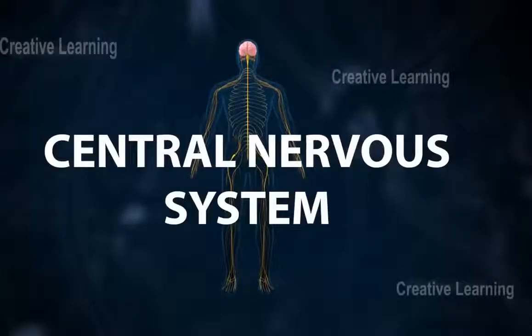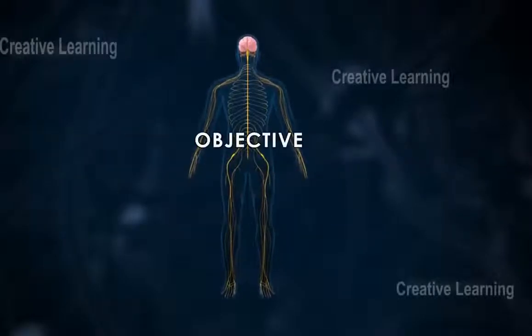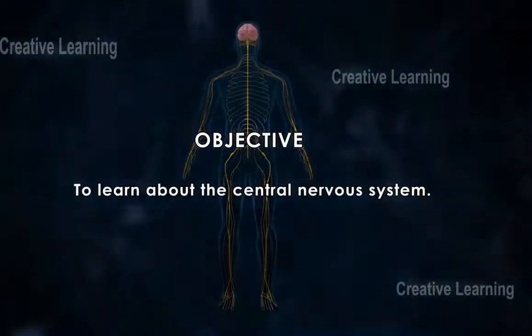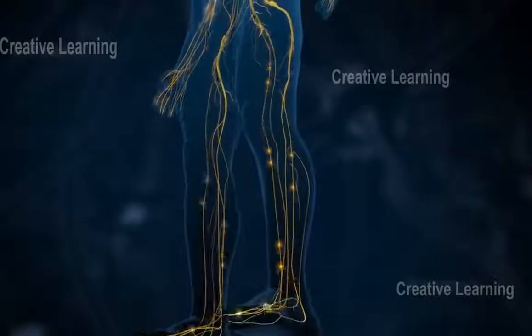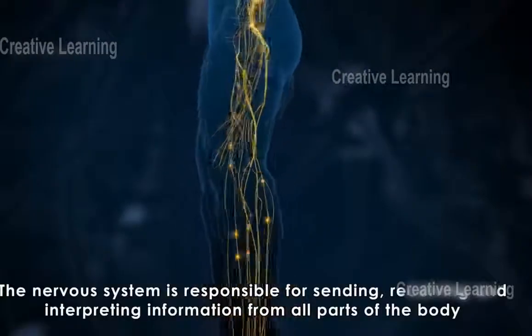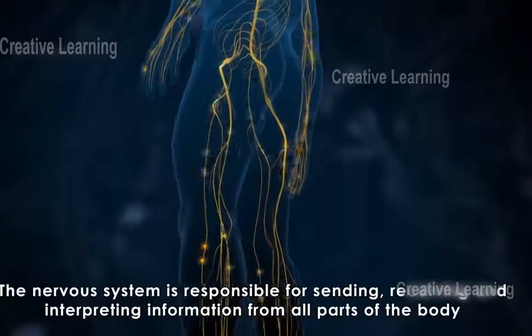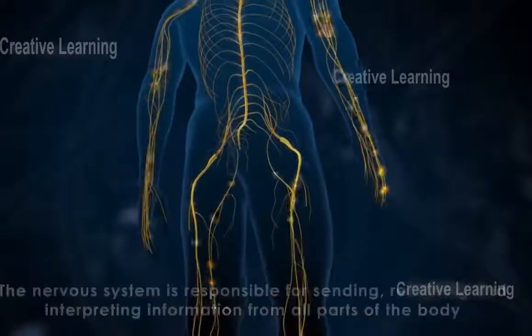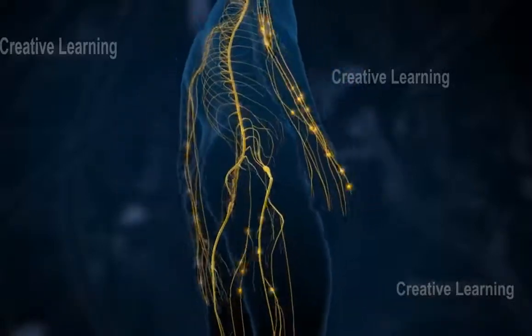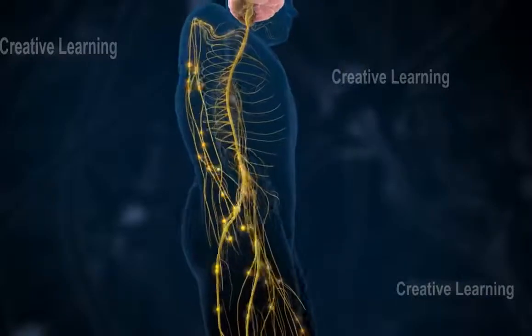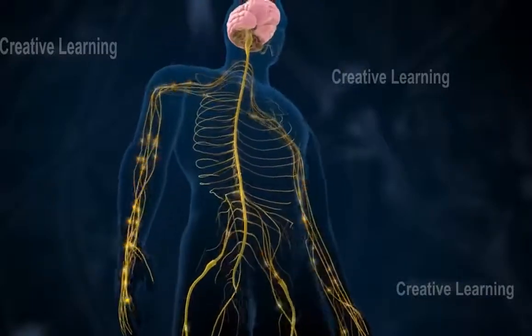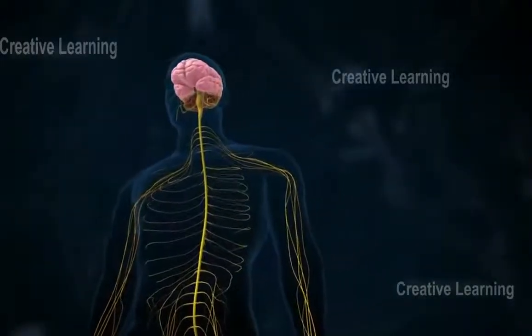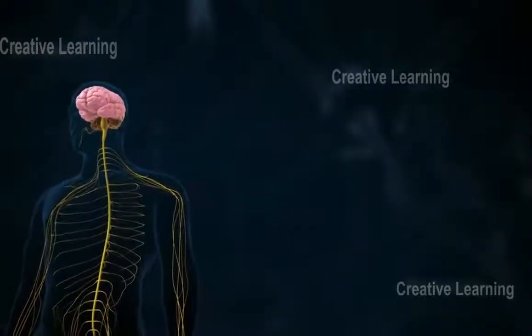The central nervous system: objective to learn about the central nervous system. The nervous system is responsible for sending, receiving, and interpreting information from all parts of the body. It responds to external stimuli and also monitors and coordinates the functions of internal organs. The central nervous system is composed of the brain and spinal cord.